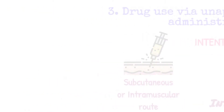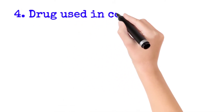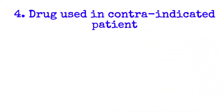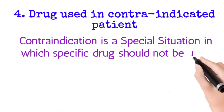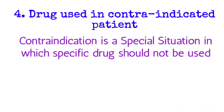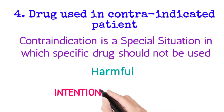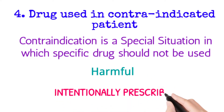The next scenario is drug used in a contraindicated patient. Contraindication is a special situation in which a specific drug should not be used by a patient, because it may be harmful to the person. However, the doctor intentionally prescribed that drug to the patient for treatment of any medical condition. This is called drug used in a contraindicated patient, and this scenario is treated as off-label use.